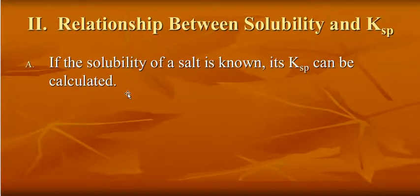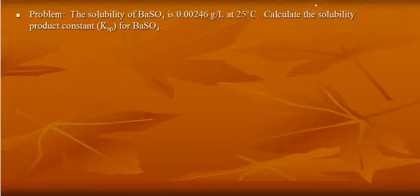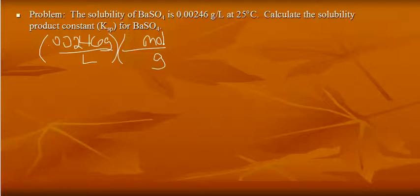If you know the solubility, you can calculate the Ksp. Let's look at this example here. The solubility of barium sulfate is given. Calculate Ksp for barium sulfate. Well, first of all, the solubility needs to be in molarity. We're in grams per liter, so let's change that. Need the molar mass to get back to molarity. Molar mass of barium sulfate is 233. So my concentration in molarity is 1.06 times 10 to the negative 5 molar.